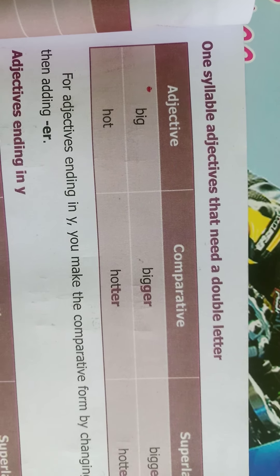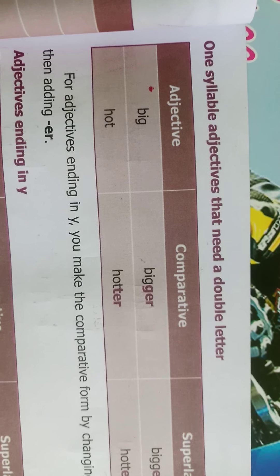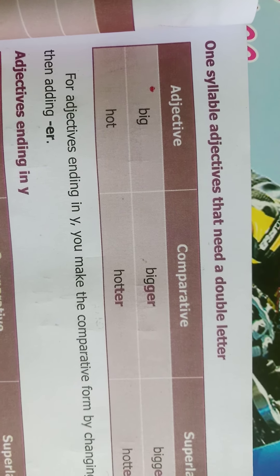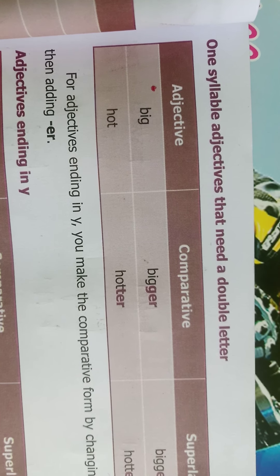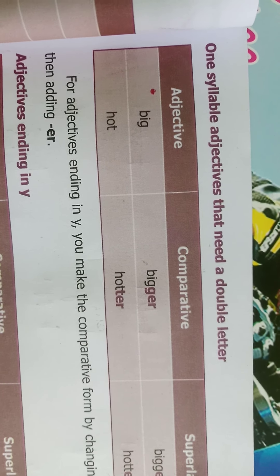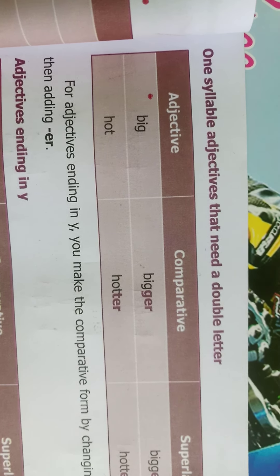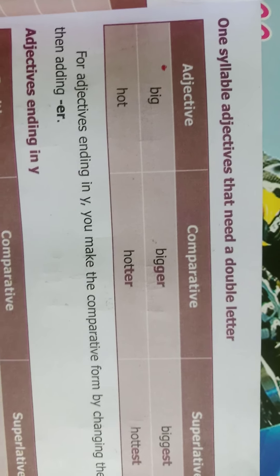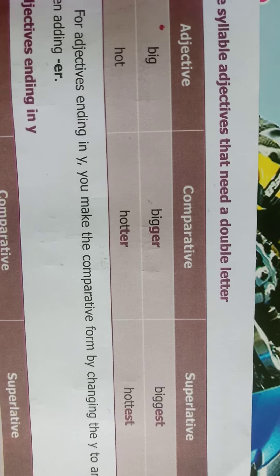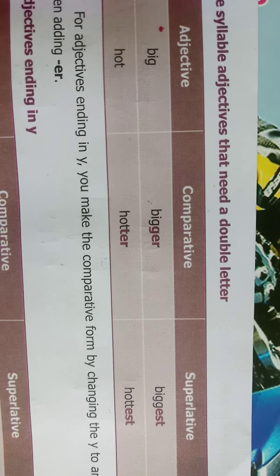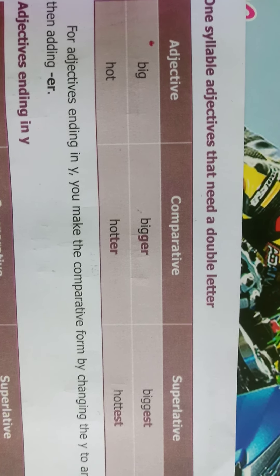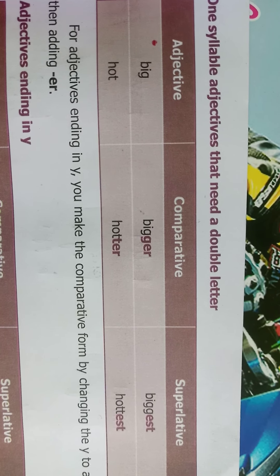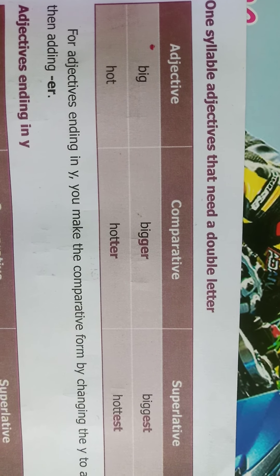One syllable adjectives that need a double letter: we double the final consonant before adding 'er' to make it comparative and 'est' to make it superlative. Look at the examples: big, bigger, biggest; hot, hotter, hottest.